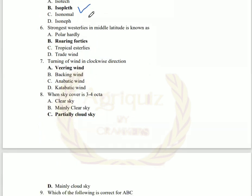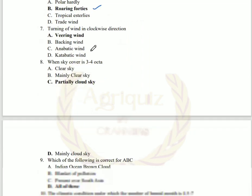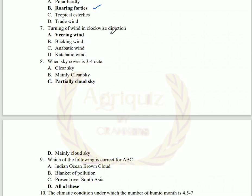The sixth question: the strongest westerly in middle latitude is known as roaring thirties. The polar Hadley is nothing but the polar easterly — wind flows from higher altitude polar region to sub-polar region. The tropical easterly is wind flowing from higher pressure region to lower pressure region. The turning of wind in a clockwise direction is known as veering wind, whereas in the anticlockwise direction it is known as backing wind.